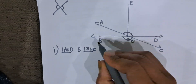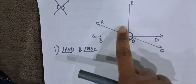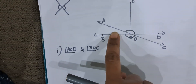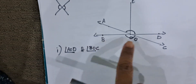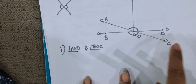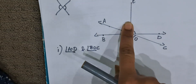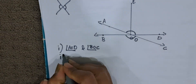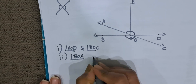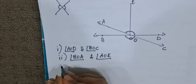So for adjacent complementary angles, we can see BOA and AOE. These two are adjacent — next to each other — and they are also complementary. By looking at the figure, we can make out that BOE is 90 degrees. So angle BOA and angle AOE are the adjacent complementary angles.